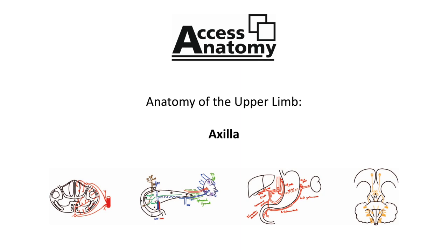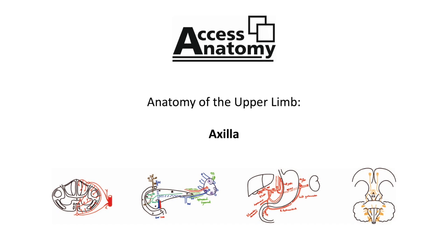The triangular space is located medial to the quadrangular space and is bounded on three sides: subscapularis superiorly, teres major inferiorly and the long head of triceps medially. It is a small space that allows the circumflex scapular artery to leave the axilla and supply the scapula.